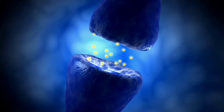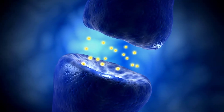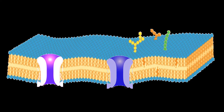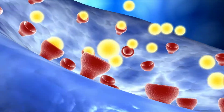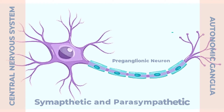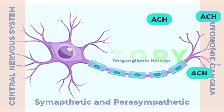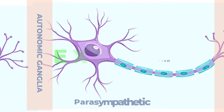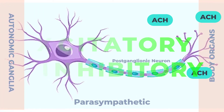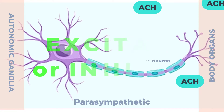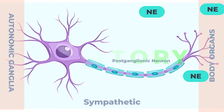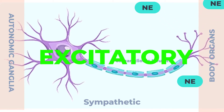Both the sympathetic and parasympathetic divisions affect target organs via neurotransmitters. Plasma membrane receptors determine whether the response will be stimulatory or inhibitory. In general, all preganglionic terminals release acetylcholine and are excitatory. All postsynaptic parasympathetic terminals release acetylcholine and these effects may be excitatory or inhibitory. Most postganglionic sympathetic terminals release norepinephrine and these effects are usually excitatory.